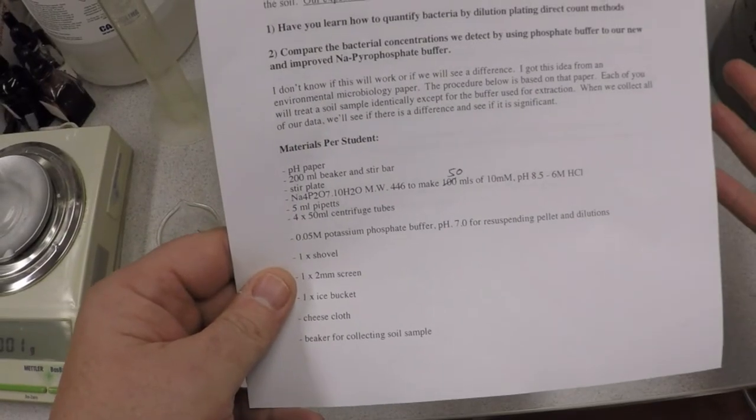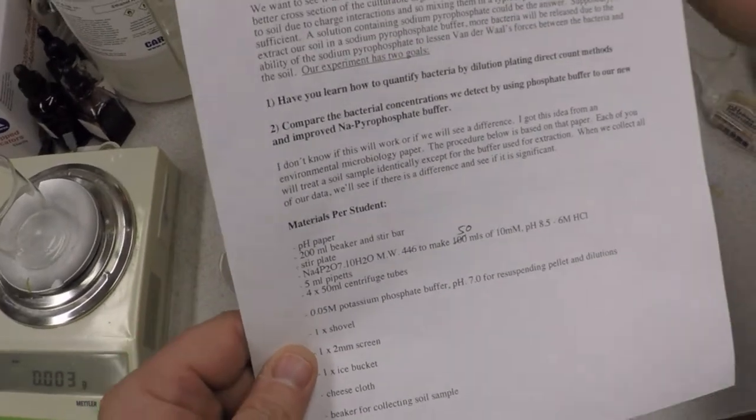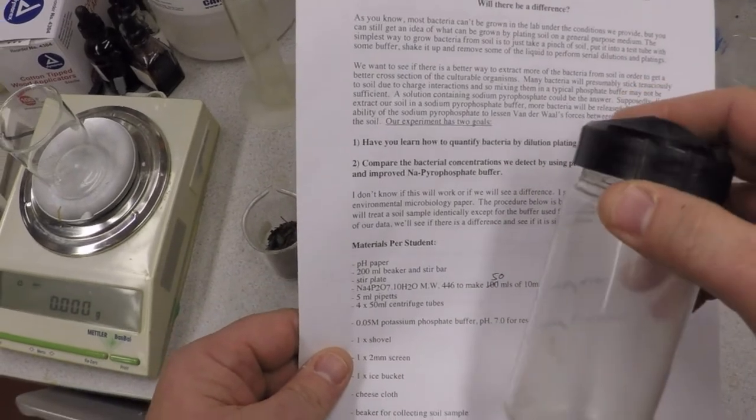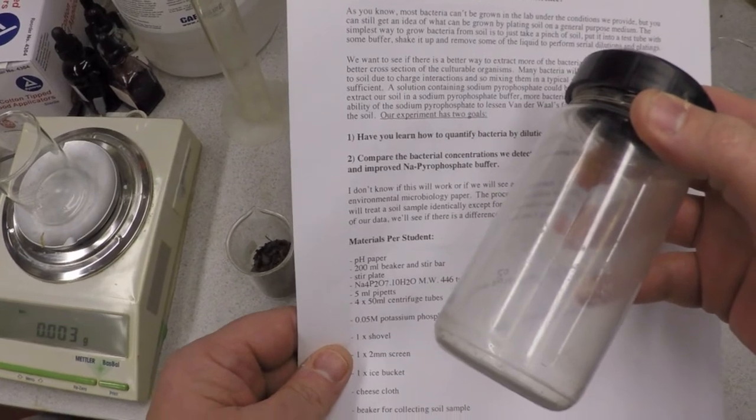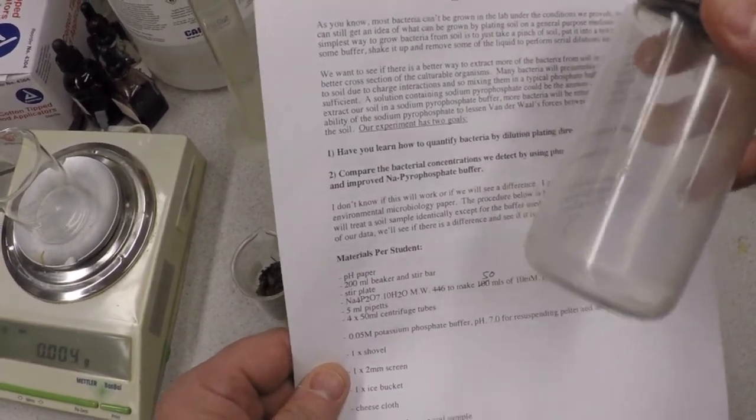You're going to have pipettes available for pipetting things. You're going to probably use these big centrifuge bottles because I'm not sure what kind of centrifuge we're going to have available to us. These will go into the big gray centrifuge that's in 165 and we'll probably go over there and use that.